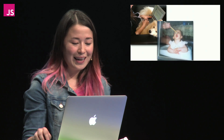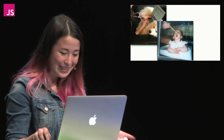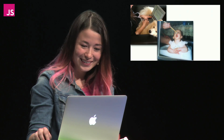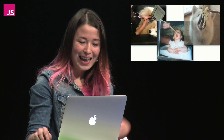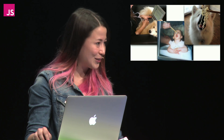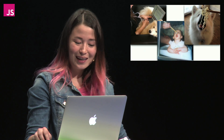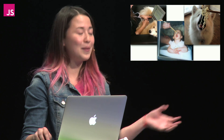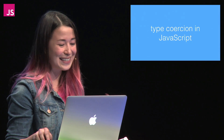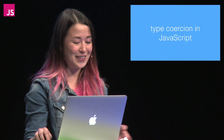Speaking of dogs, this is a picture of my dog's small talk enemy. This is a picture of a picture of me eating noodles. And this is a picture of small talk eating noodles. Now that you know all about me, let's talk about type coercion in JavaScript.